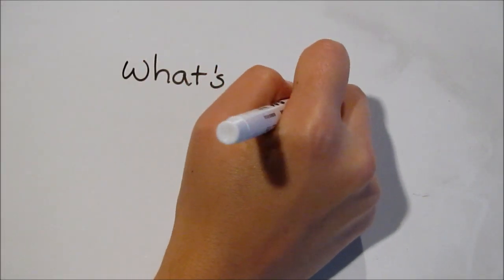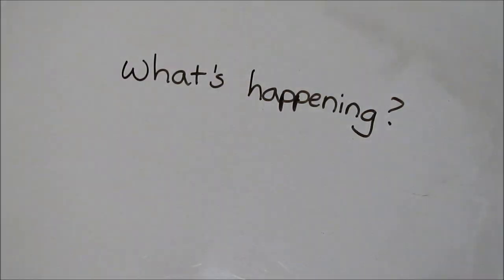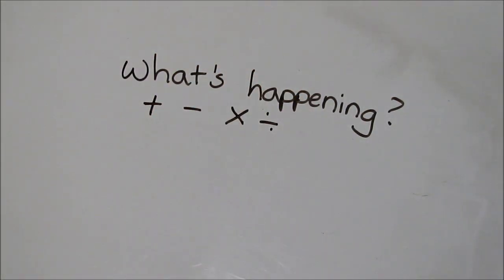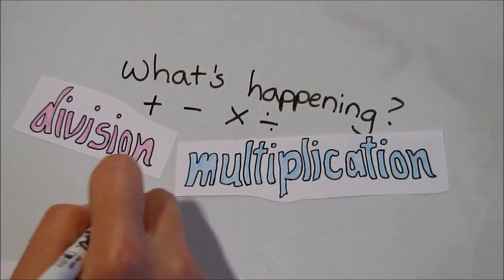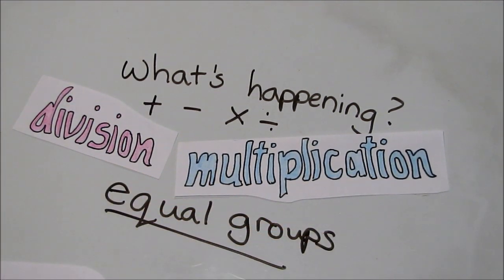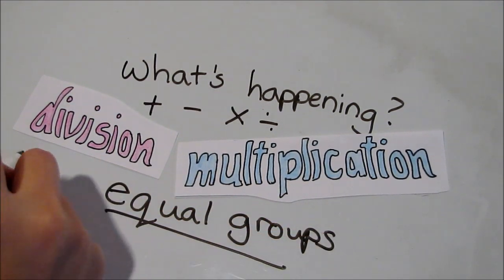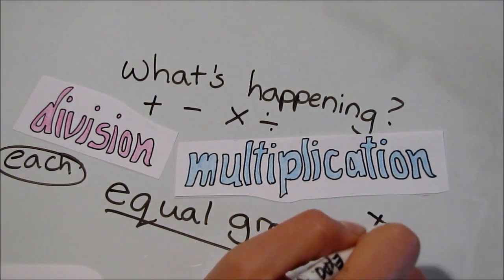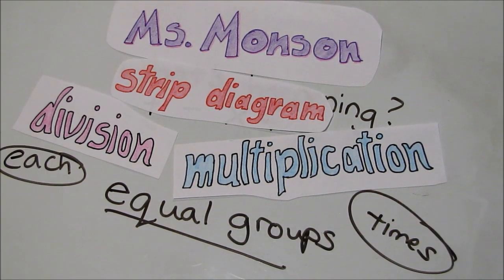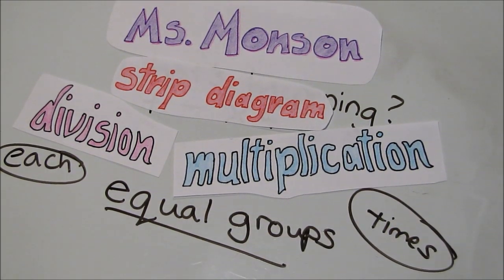Strip diagrams help us show what's happening in a problem and can help us decide what operation to use to solve it. For multiplication and division strip diagrams, the key is going to be equal groups, and you want to be aware of the words 'each' and 'times.' This is Ms. Monson, and this video was about multiplication and division strip diagrams. Thank you very much for joining us, and I will see you next time.